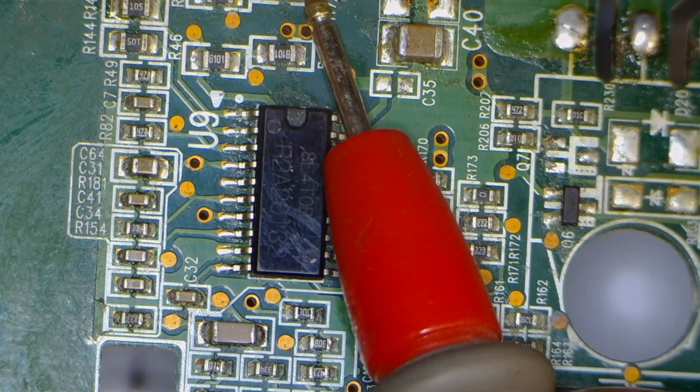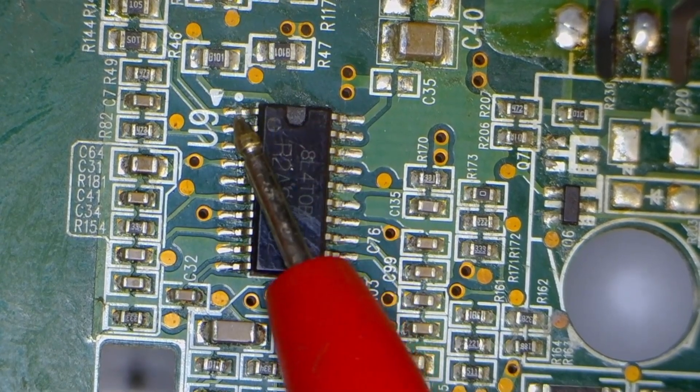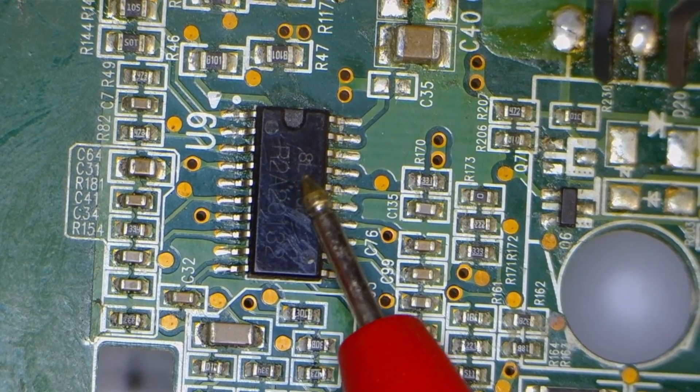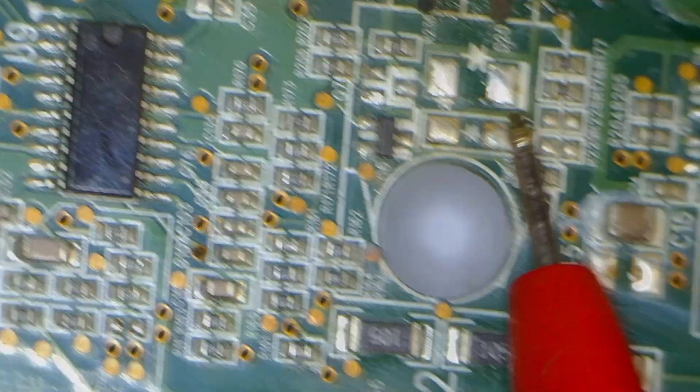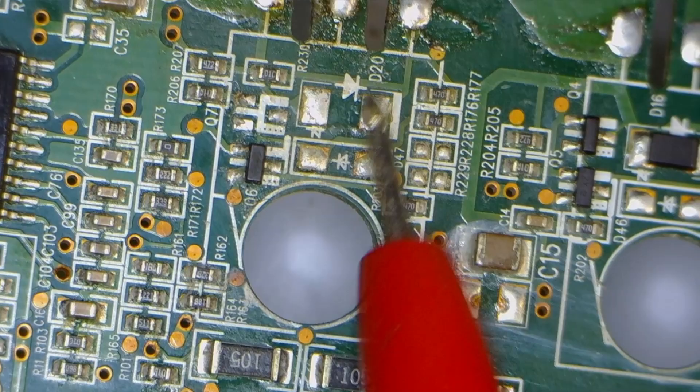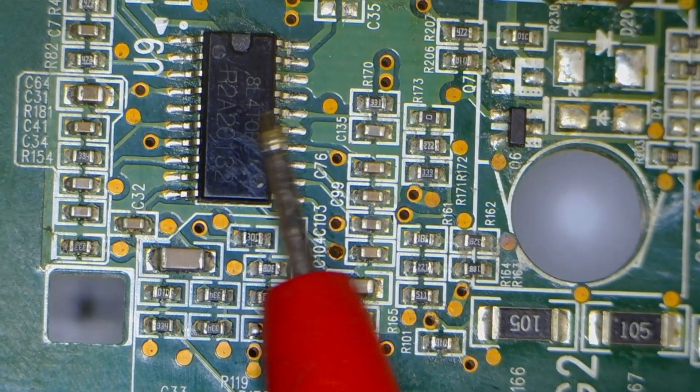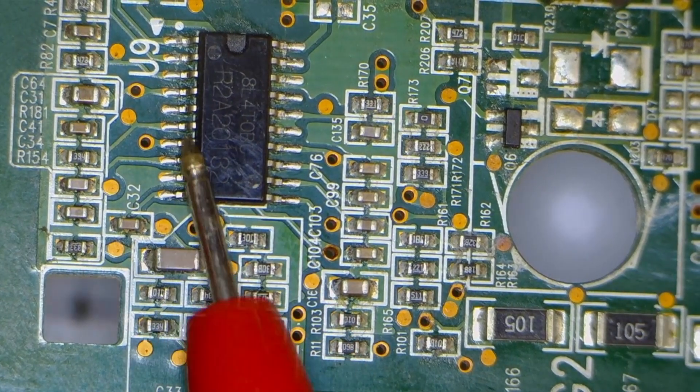This IC continuously monitors both overcurrent and undercurrent conditions through these two points. Additionally, it performs other functions, such as controlling the on and off states of the IGBTs. This IC also communicates with the microcontroller, receiving commands from it, and in some cases, sending commands back.